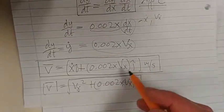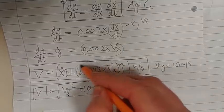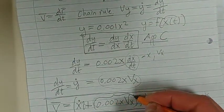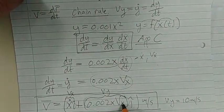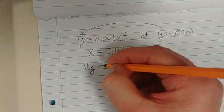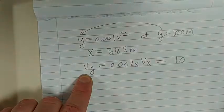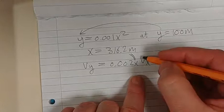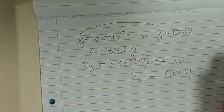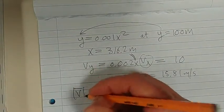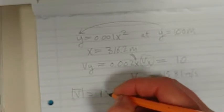We know that vy is a constant 10 meters per second. The whole term in front of j is vy, so vy equals 0.002x·vx. We know vy equals 10 and x equals 316.2, so the only unknown is vx. Solving gives vx equals 15.81 meters per second. Then calculating the magnitude of v gives 18.7 meters per second.